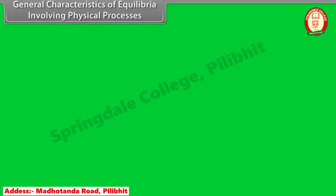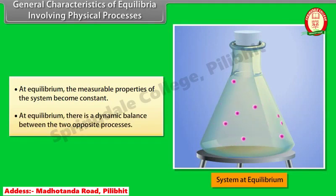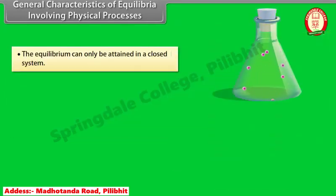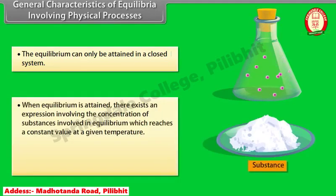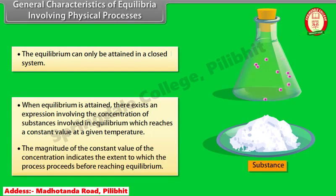General characteristics of equilibria involving physical processes: at equilibrium, the measurable properties of the system become constant. There is a dynamic balance between the two opposite processes, and equilibrium can only be attained in a closed system. When equilibrium is attained, there exists an expression involving the concentration of substances that reaches a constant value at a given temperature. The magnitude of this constant value indicates the extent to which the process proceeds before reaching equilibrium.